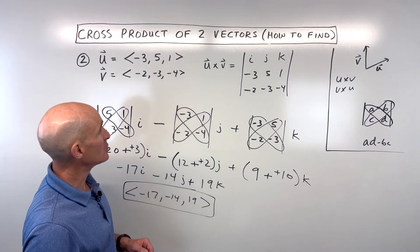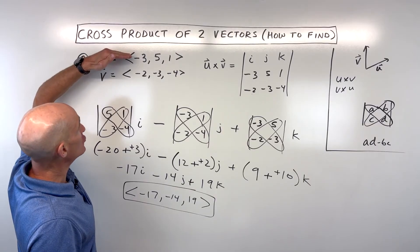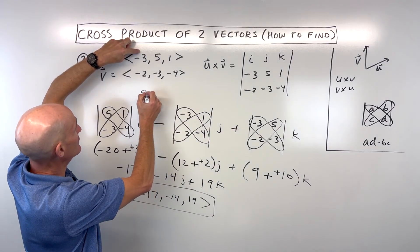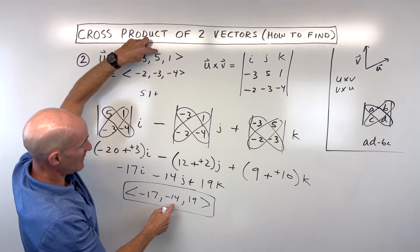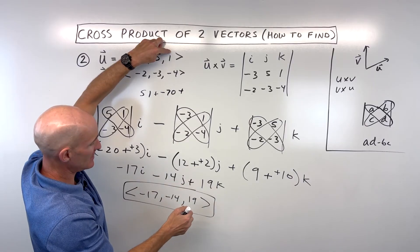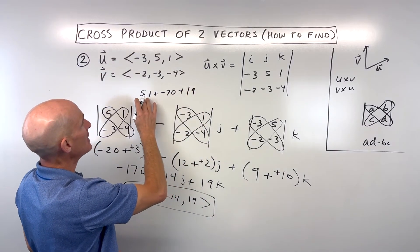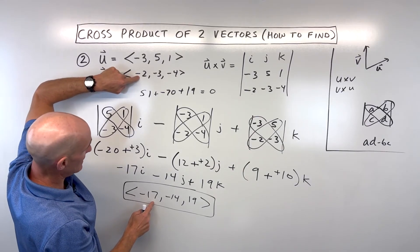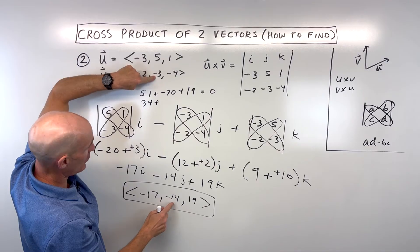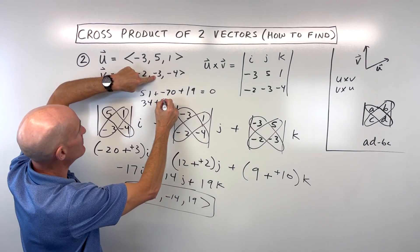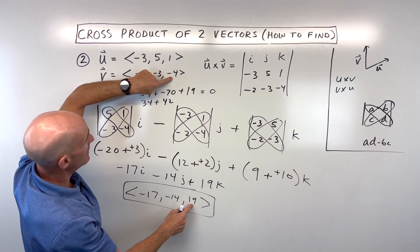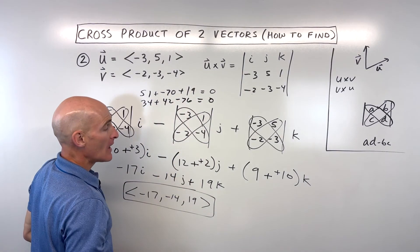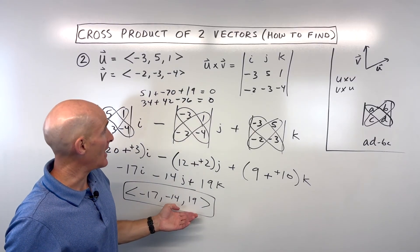Again, if we want to do a quick check, it should be orthogonal — perpendicular to both vector u and vector v. Doing the dot product: negative three times negative seventeen is fifty-one, plus five times negative fourteen is negative seventy, plus one times nineteen is nineteen. Seventy plus negative seventy is zero — so far so good. Multiplying by vector v: negative two times negative seventeen is thirty-four, negative three times negative fourteen is forty-two, negative four times nineteen is negative seventy-six. Seventy-six plus negative seventy-six is zero — we can verify this vector is indeed orthogonal to both u and v.